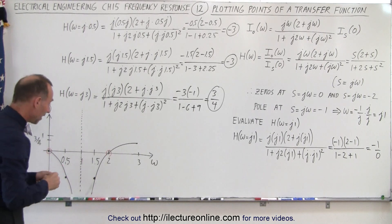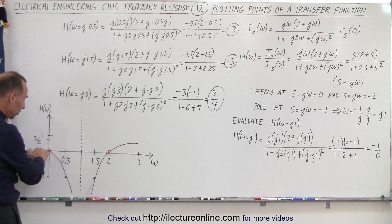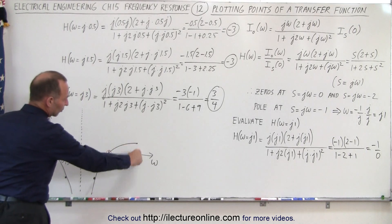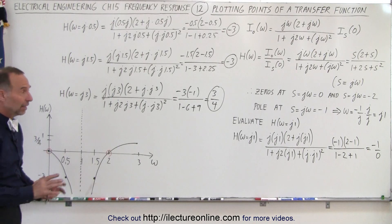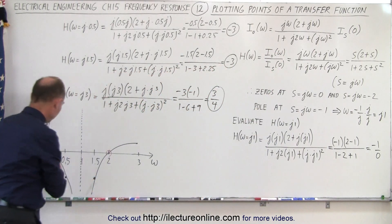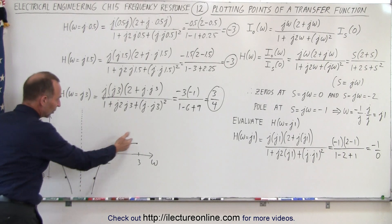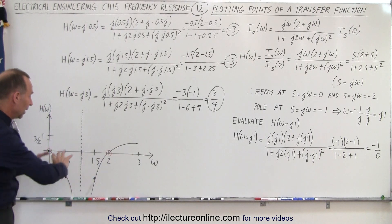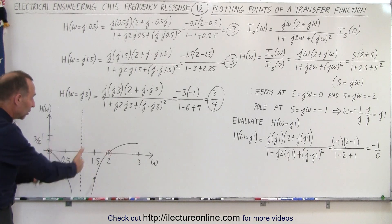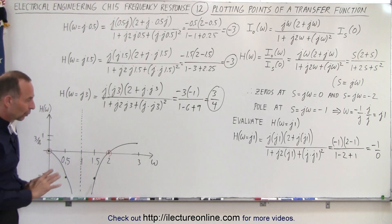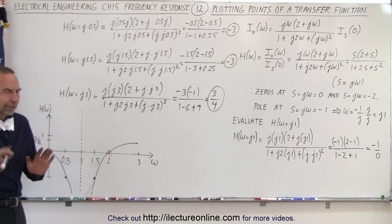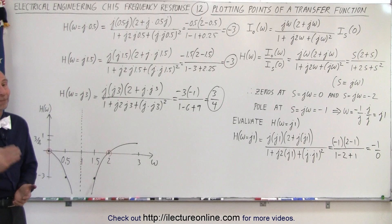We now have a graphical representation of the transfer function. It is zero at ω equals zero, goes to negative infinity when ω equals one, returns to zero when ω equals two, and equals three quarters when ω equals three. The transfer function represents the ratio of the output current over the input current. You can evaluate any transfer function for any value algebraically to graphically represent what it looks like. Later we'll get a better way to draw these transfer functions graphically using Bode plots — but at least you now have a good idea of what it looks like.